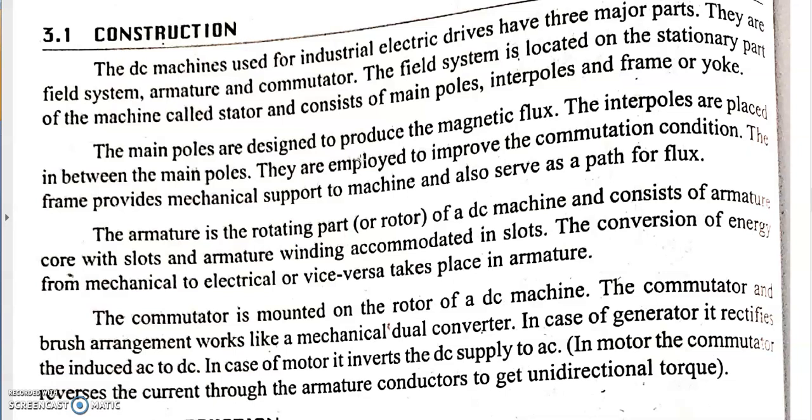The field system is the stationary part and also the outermost part of the machine. Being stationary, it is also called the stator. It consists of main poles, inter poles, frame, and yoke. The main poles are designed to produce the magnetic flux. The inter poles are placed in between them to improve the commutation condition. The frame provides mechanical support to the machine as well as a path for the flux.